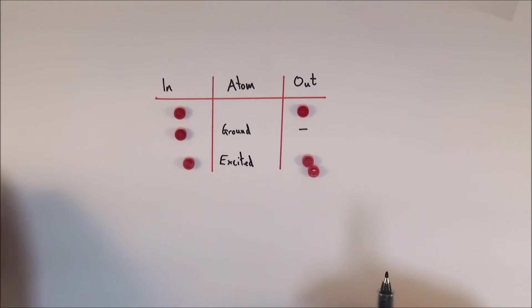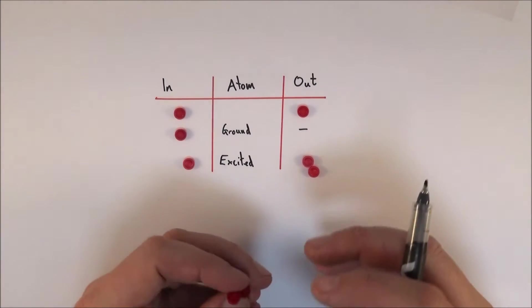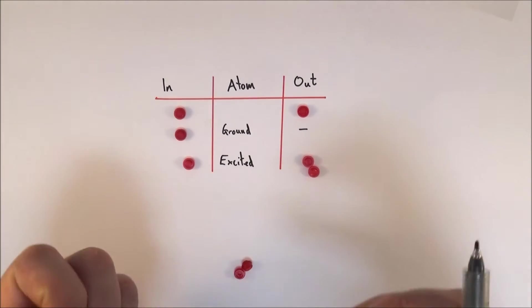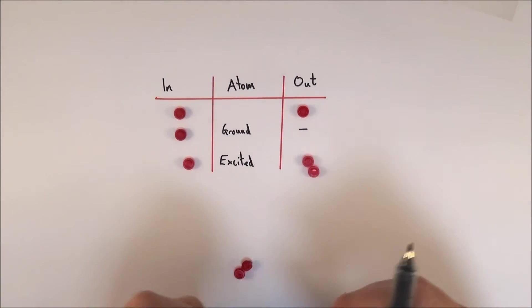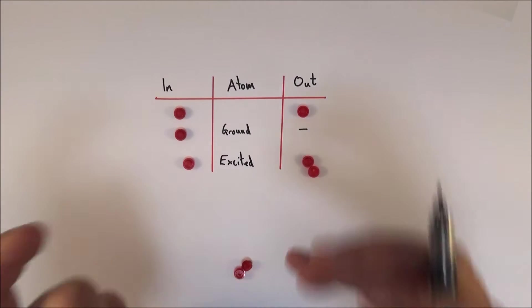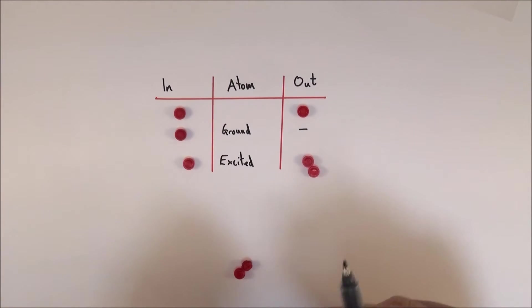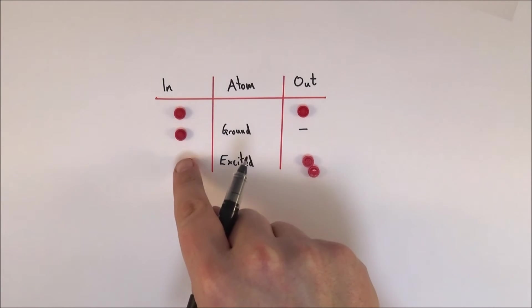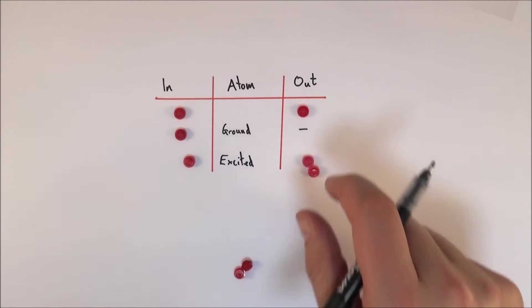We need lots and lots of photons being emitted. This is where we need to think about how we can do something clever with our physics to get laser light out. Remember, laser stands for light amplification by the stimulated emission of radiation. What we want to do is stimulate excited atoms to give out even more photons.